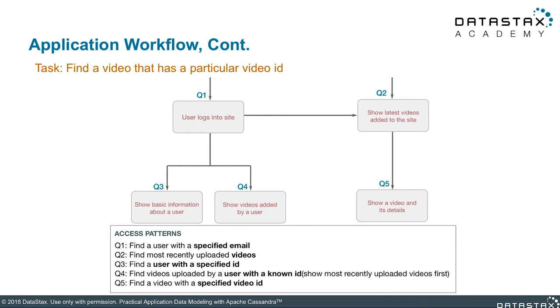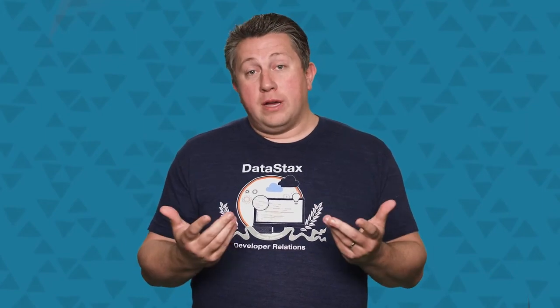Here is query five. Show a video and its details. When a user comes to killer video, they get a whole list of available videos. They can further click on that video and see all the details about that video. That's what query five is doing for us. Thus, for query five, we need to find a video with a specific video ID.